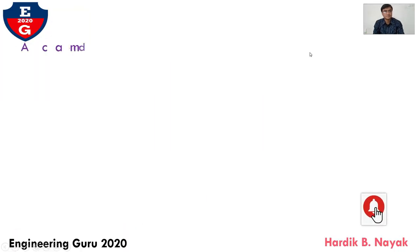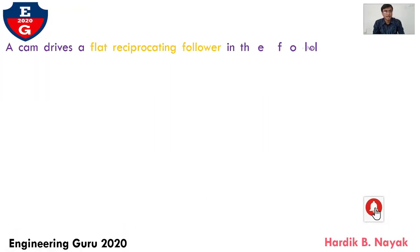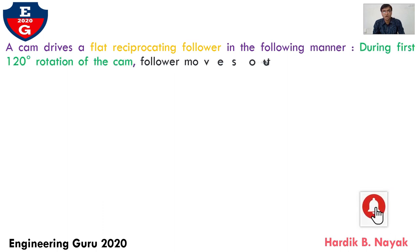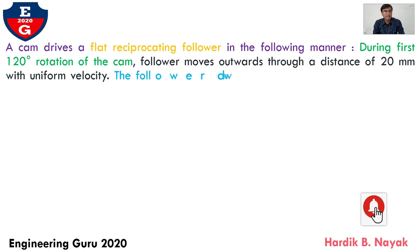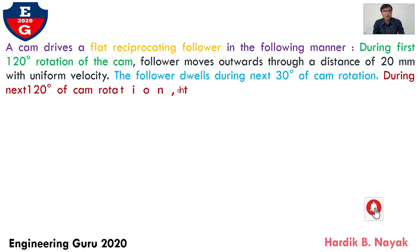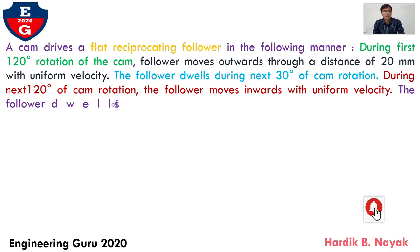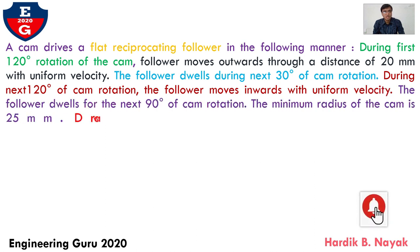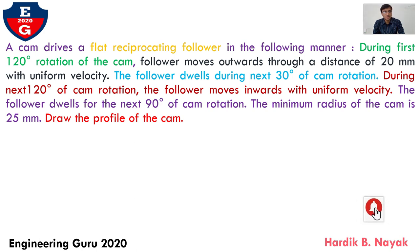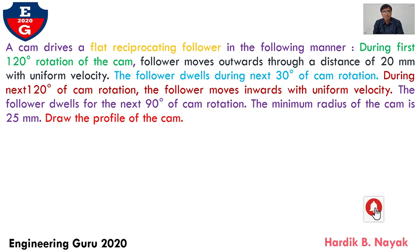Let's take one example: a cam drives a flat reciprocating follower in the following manner. During the first 120 degrees of cam rotation, the follower moves outward through a distance of 20 mm with uniform velocity. The follower dwells during the next 30 degrees of cam rotation. During the next 120 degrees of cam rotation, the follower moves inward with uniform velocity. The follower dwells for the next 90 degrees of cam rotation. The minimum radius of the cam is 25 mm. Draw the cam profile.